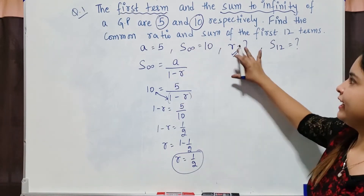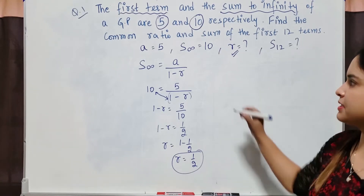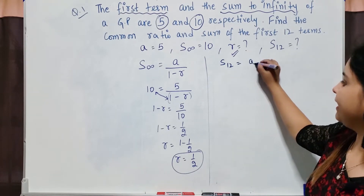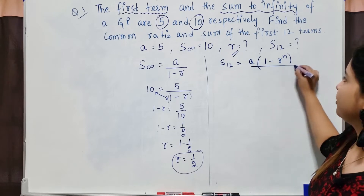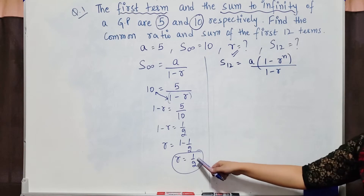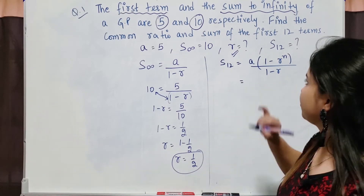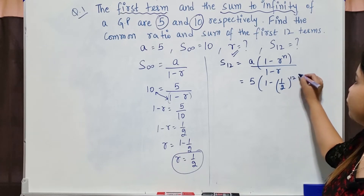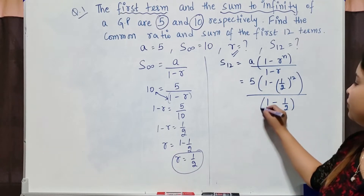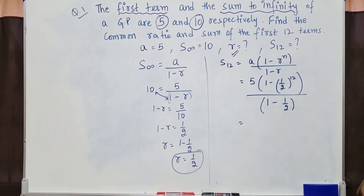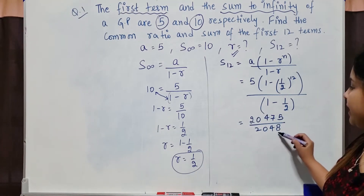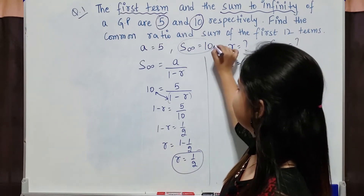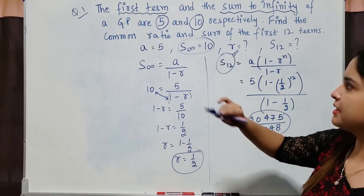Now I have the values of a and r, so I can find the sum of the first 12 terms. The formula for S₁₂ is a(1 minus r raised to power n) over (1 minus r). I use this formula because r is less than 1. Substitute the values: 5 times (1 minus 1/2 raised to power 12) over (1 minus 1/2). Simplify this and you get 20475 divided by 2048. This is the required answer. We used sum to infinity and sum of the first n terms.